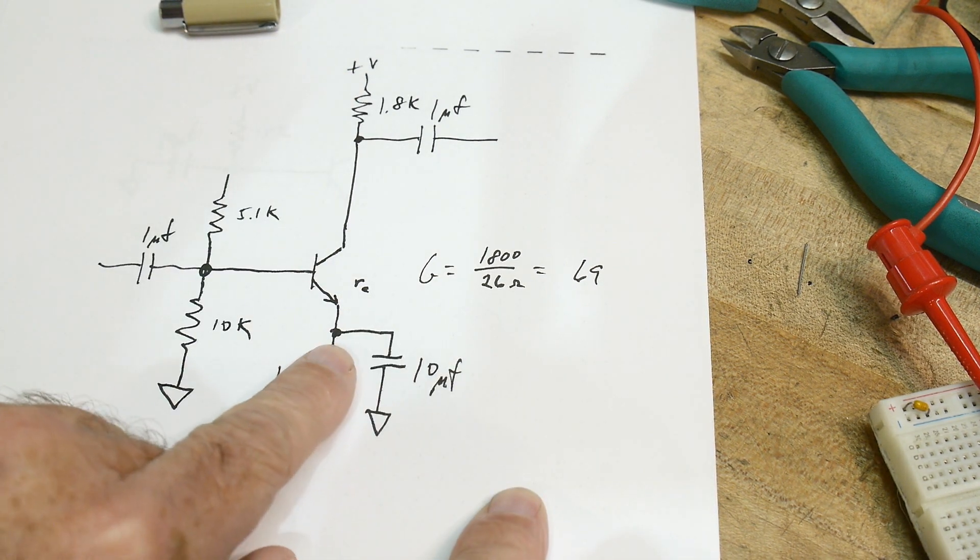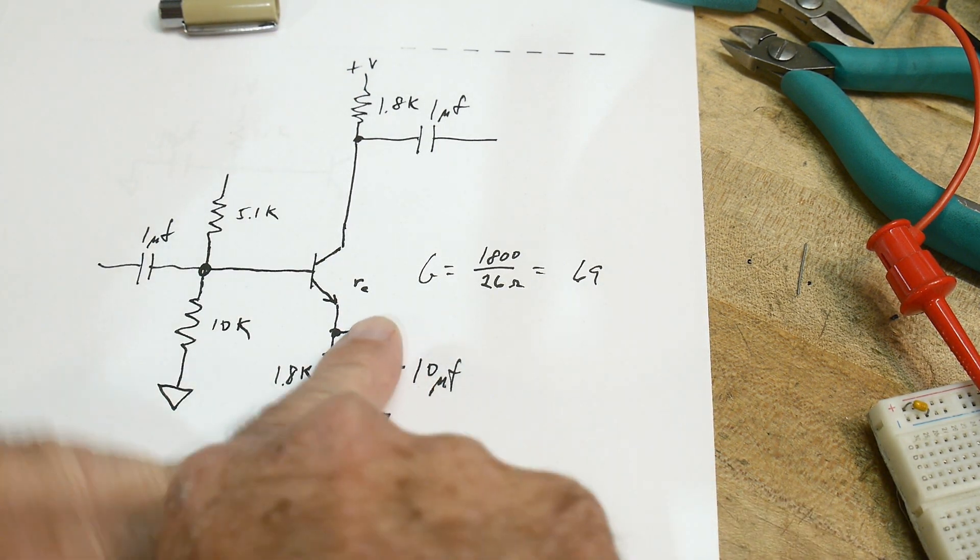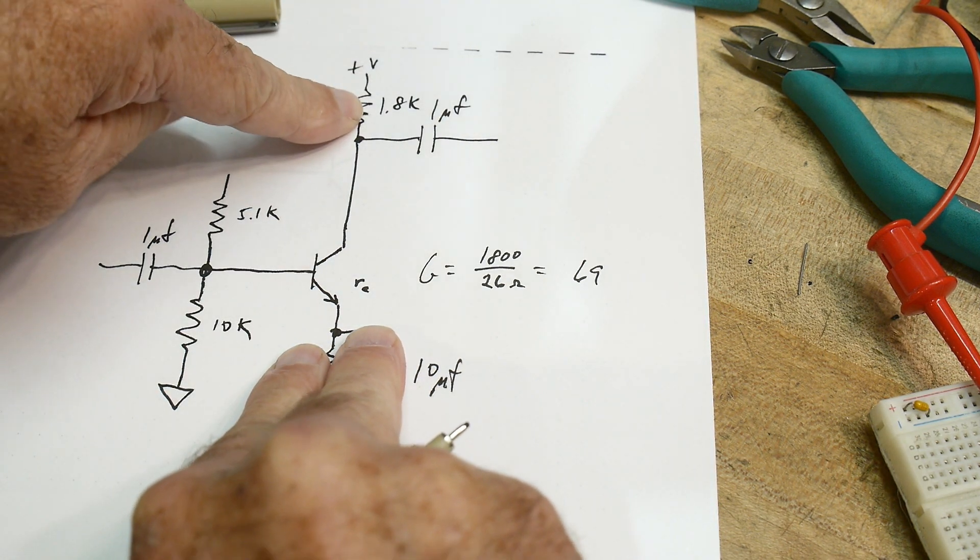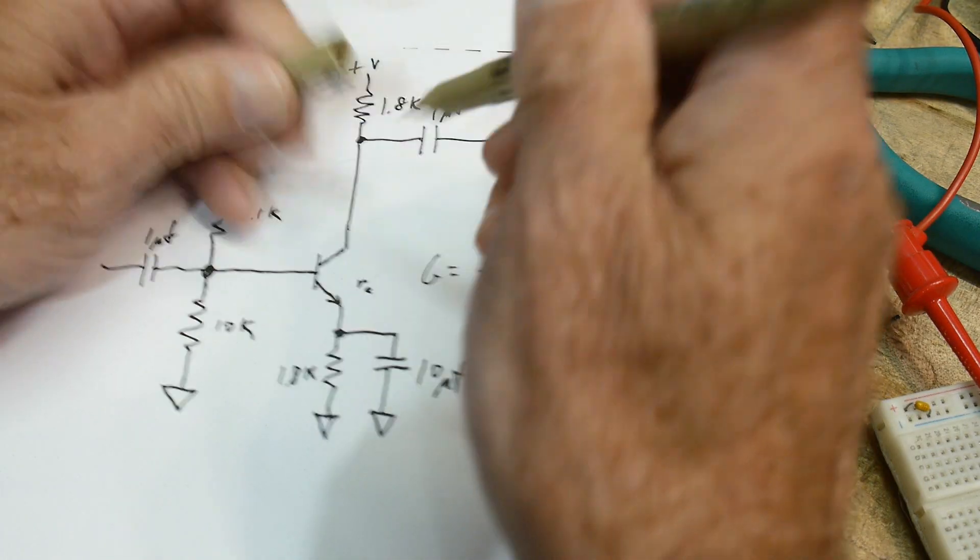But we have an AC ground here because of this capacitor, so it's this little resistor and that big resistor there, about 69. So let's take a look at our circuit, see what we get.